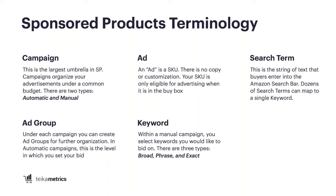Underneath the ad, we have keywords. When you create a manual campaign, you select the keywords you'd like to bid on, and there are three types: broad, phrase, and exact. The key differentiation between a keyword and a search term is important to understand: the search term is what the actual user on Amazon.com enters into the search bar, while the keyword is what you set up in your sponsored products campaign. Dozens or hundreds of search terms can correspond to one single broad keyword.